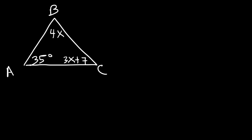Here's another example. Let's say this is angle A, B, and C. Angle A is 35 degrees. Angle B is 4x. And angle C is 3x plus 7. Find the value of angle B. Feel free to pause the video and work on that problem. So let's write an equation. We know that the three angles has to add up to 180.